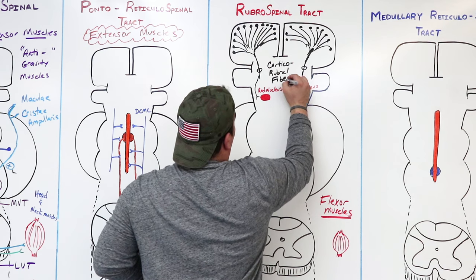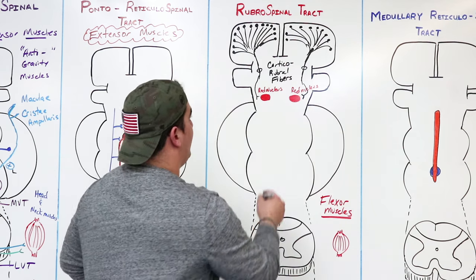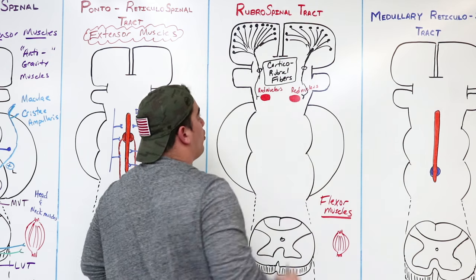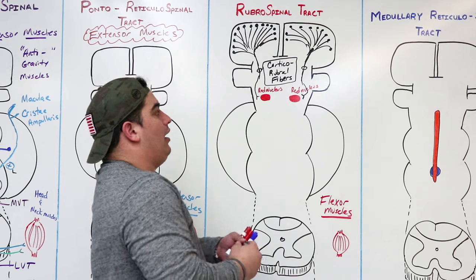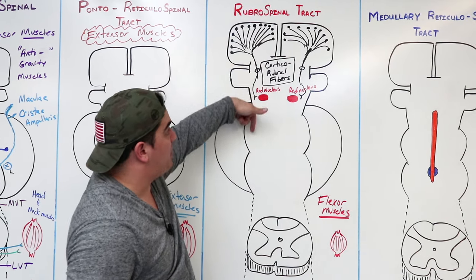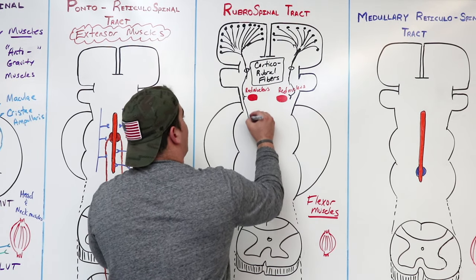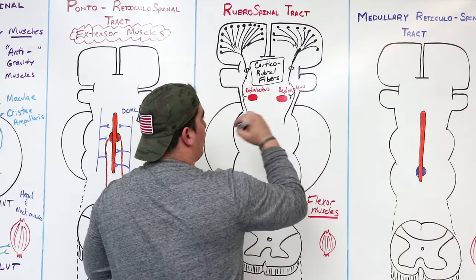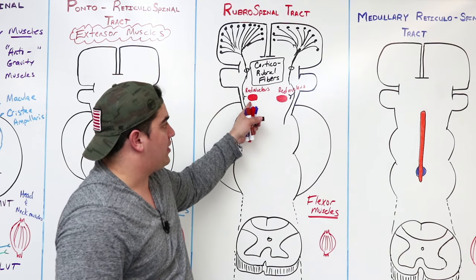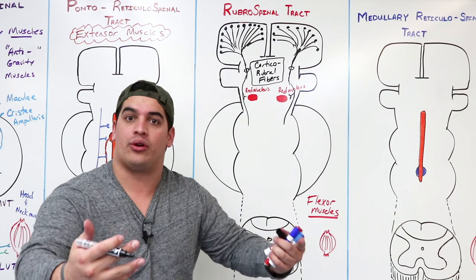So from the cortex to the red nucleus, we have these corticorubral fibers. The descending corticospinal fibers give off little collaterals and continue as the corticospinal tract, while the red nucleus gives rise to what's called the rubrospinal tract, which assists the actual corticospinal tract.